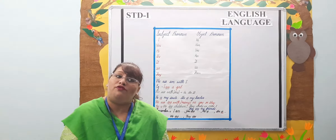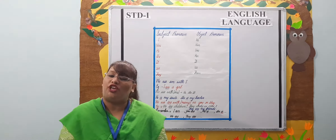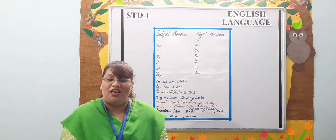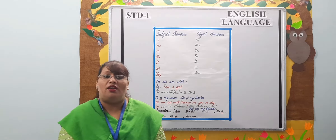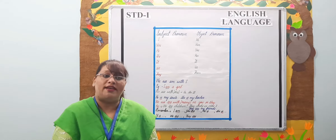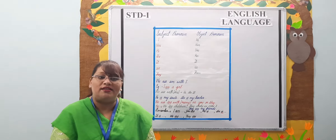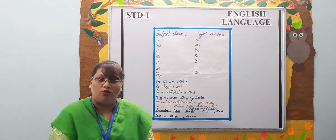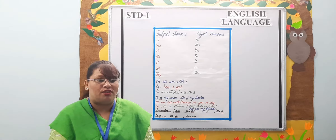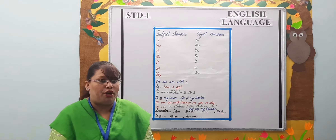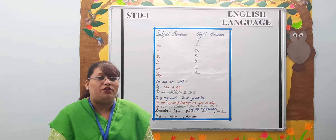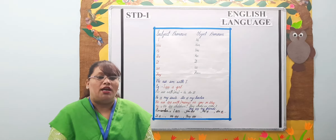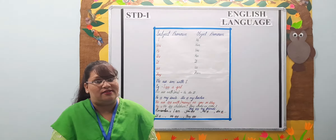Pronouns are of two types: subject pronouns and objective pronouns. Subject pronouns are the words that tell us who or what the sentence is about. An objective pronoun receives the action of a verb. An objective pronoun appears after a preposition. Objective pronouns frequently come at the end of the sentence.